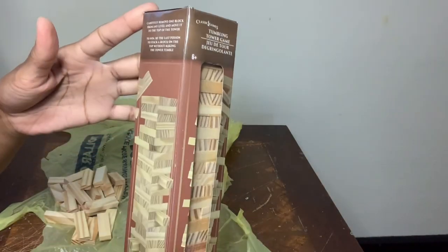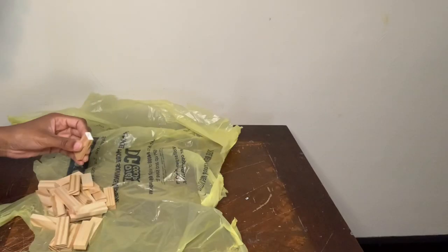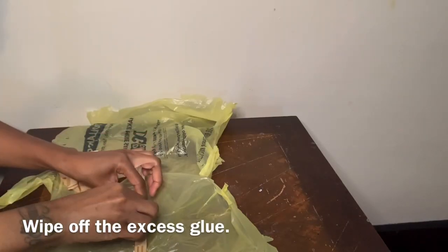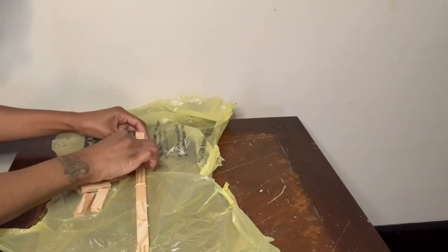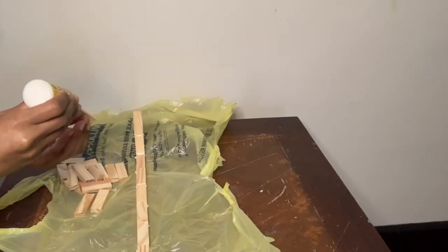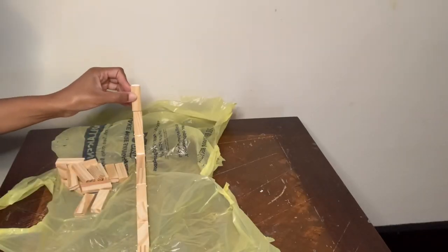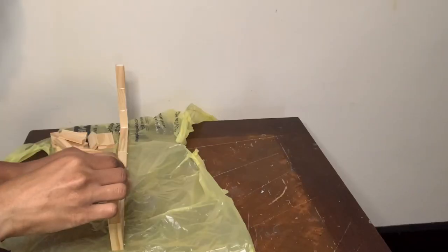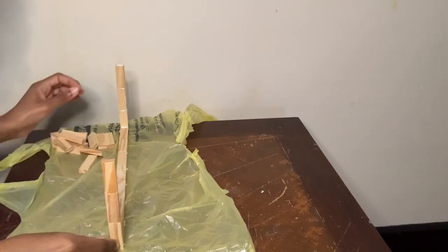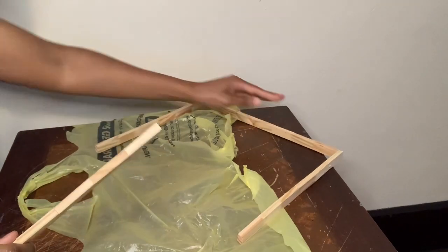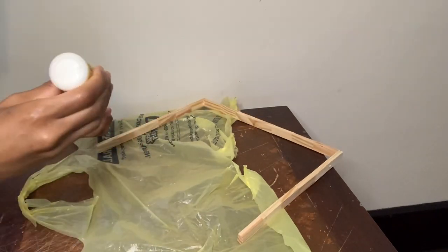Next I'm going to glue some of these wood blocks together with my wood glue. So this is what it's looking like so far. Now I'm going to take this smaller piece and glue it to the bigger piece.